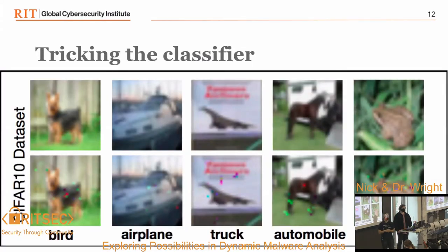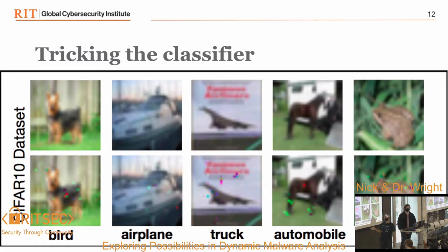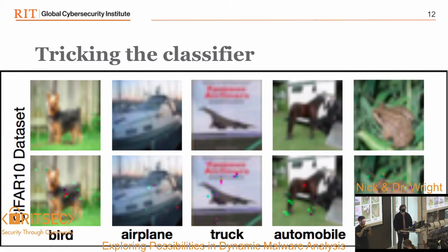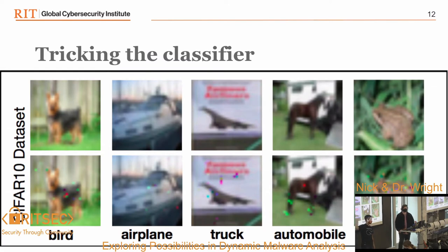One of the things it means is that you can trick a classifier. The CIFAR-10 data set is like ImageNet but with much smaller images and only 10 classes — bird, airplane, truck, automobile, and a few others. Here we have a picture of a dog, and here you have a picture of a dog that's been slightly modified. That does not trick you into thinking it's a bird. But if you take one of those state-of-the-art deep learning classifiers and ask it what this is, it says, oh yeah, that's a bird. And that's really weird. Trying to understand that has been a big research topic since people figured this out in about 2014.